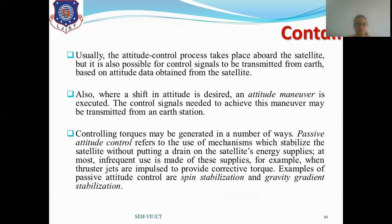Passive attitude control refers to the use of mechanisms that stabilize the satellite without draining the satellite's energy supplies — at most making infrequent use of those supplies. For example, when thruster jets apply an impulse to provide corrective torque, if the satellite is not in the correct attitude position, thruster jets provide the corrective torque to maintain the attitude. Examples of passive attitude control are spin stabilization and gravity gradient stabilization.